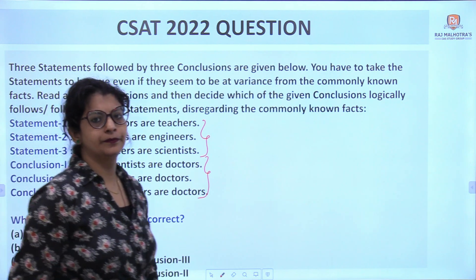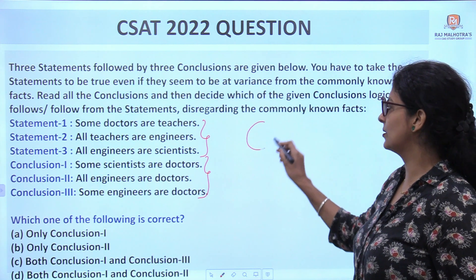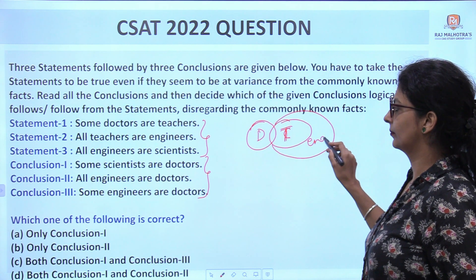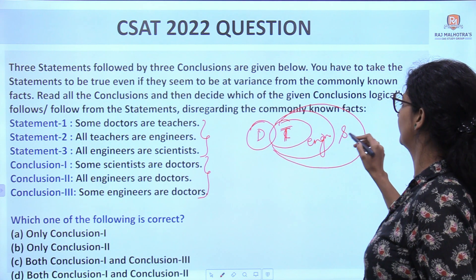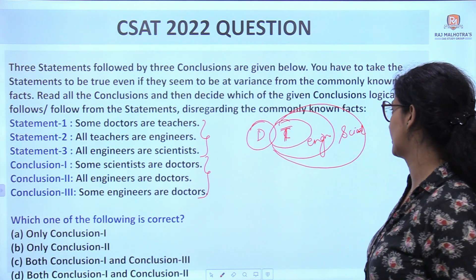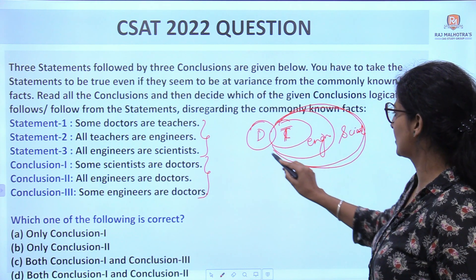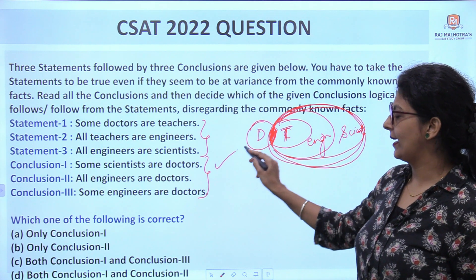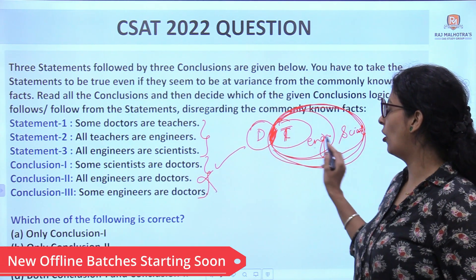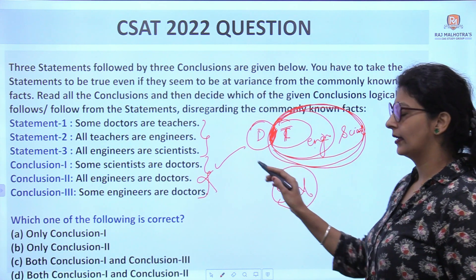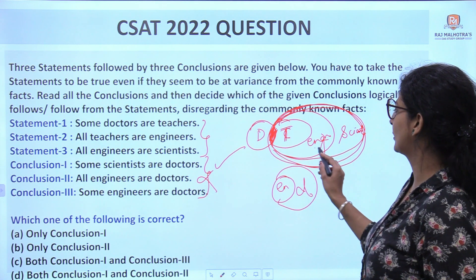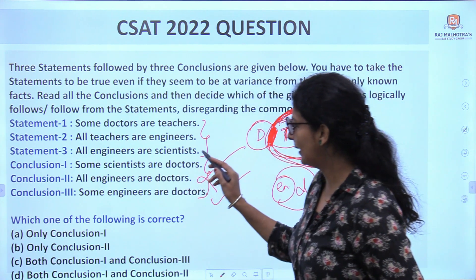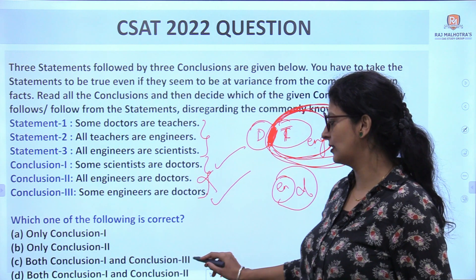Another question from last year: Statements — Some doctors are teachers. All teachers are engineers. All engineers are scientists. Conclusions: (1) Some scientists are doctors — correct, because doctors came into scientists. (2) All engineers are doctors — not visible, wrong. (3) Some engineers are doctors — correct, some engineers include doctors. So answer is first and third follow — Option C.